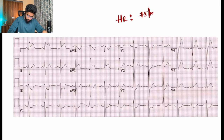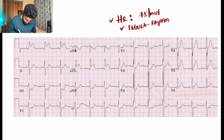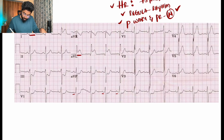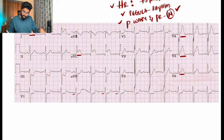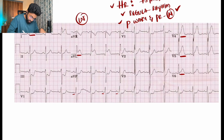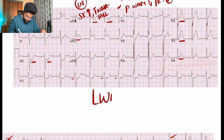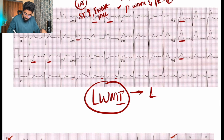For the next ECG: heart rate around 75, regular rhythm, P waves and PR interval look almost normal. There is ST elevation and T wave changes in AVL and lead 1. Since leads 1 and AVL are lateral leads, we should also see changes in V5 and V6 — and yes, changes are present in V4, V5, and V6 as well. Therefore this is lateral wall MI, with the blocked artery being the LCX.